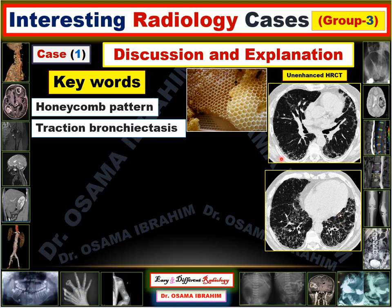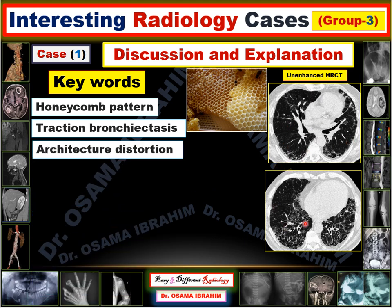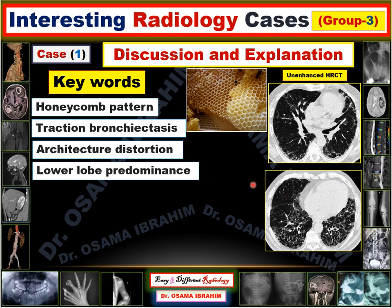The second keyword is traction bronchitis, resulting from volume loss and fibrosis in the posterior lung fields. The third keyword is architectural distortion — in the posterior lung fields there are reticular opacities, pleural thickening, and subpleural lines, all resulting in architectural distortion. The fourth keyword is lower lobe predominance. All these cuts are below the tracheal bifurcation, so lower lobe predominance of these changes is consistent with a diagnosis of lung fibrosis.